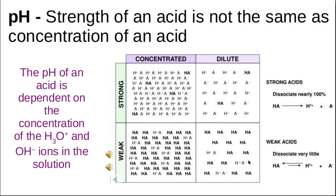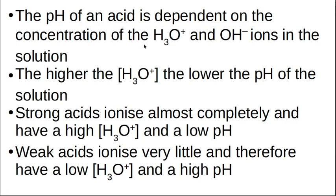When concentrated, there are a lot of particles in a small space; when diluted, there are very few particles. The concentration of protons per unit space is not that many, but compared to the undissociated acid there are a lot of them. pH depends on the concentration of protons and hydroxide ions. Acids have a low pH below 7, meaning a very high concentration of hydronium ions — the higher the hydronium ion concentration, the lower the pH.